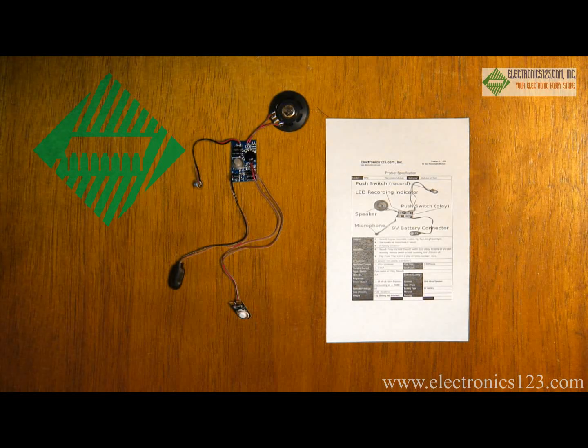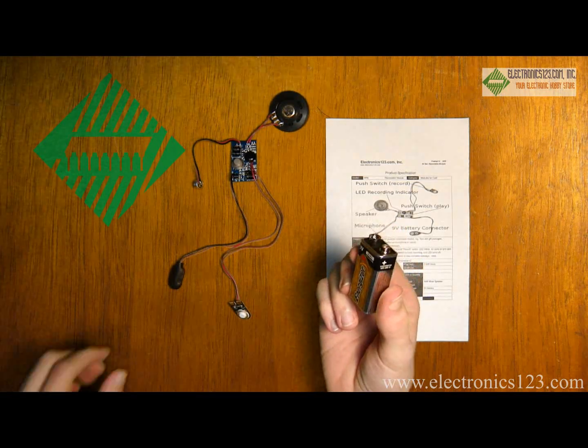After removing the BR9 from its packaging, connect the 9-volt battery to the battery snap terminal.